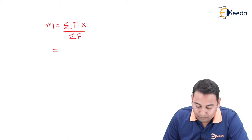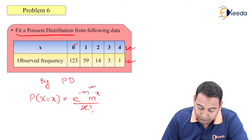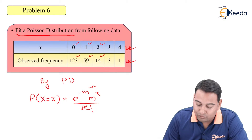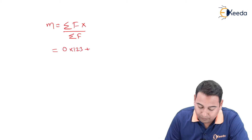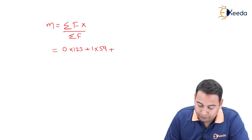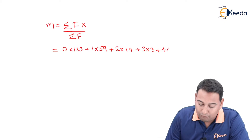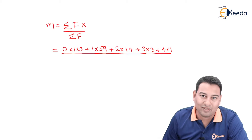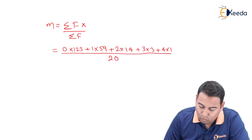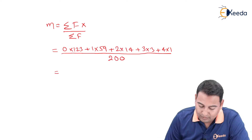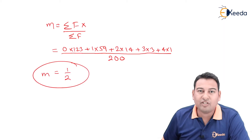Summation of fx means: 0 into 123, plus 1 into 59, plus 2 into 14, plus 3 into 3, plus 4 into 1, the whole divided by summation of f. Adding all the frequencies gives 200. If you solve this in a calculator, you will get the value of m as one half. So m is equal to 0.5.